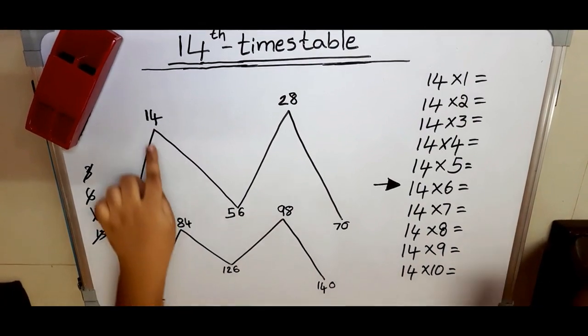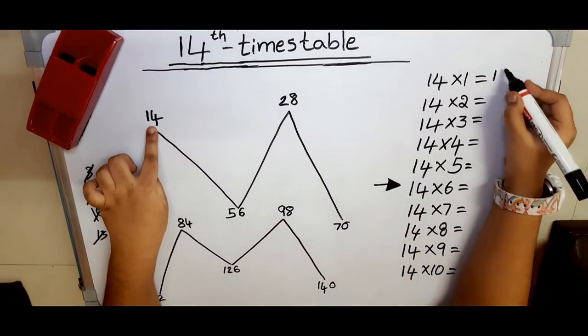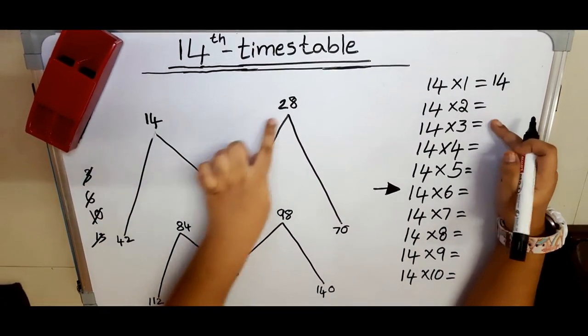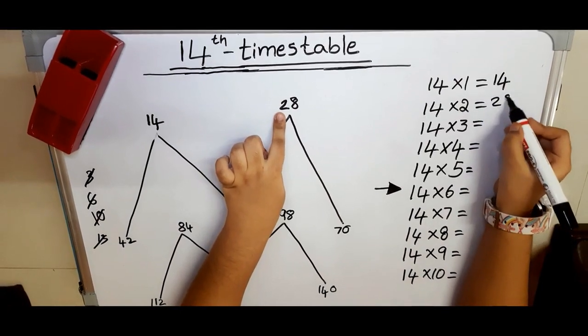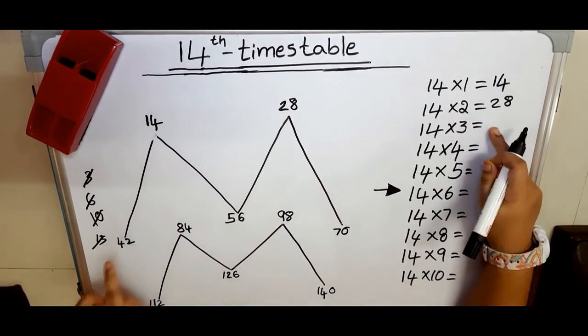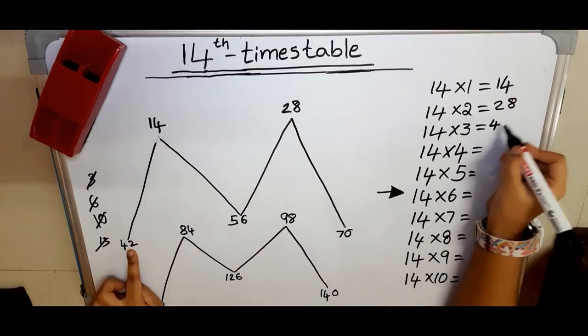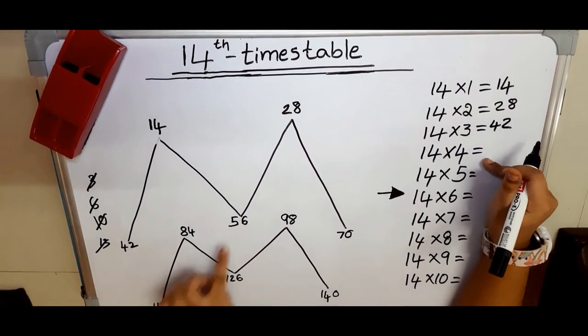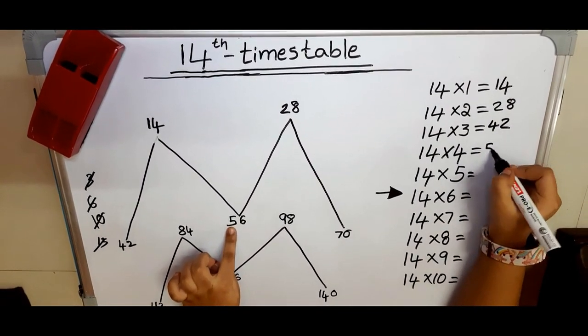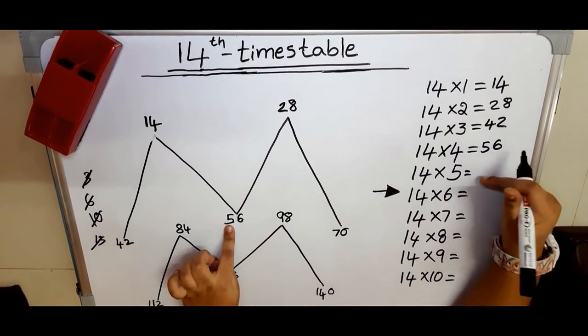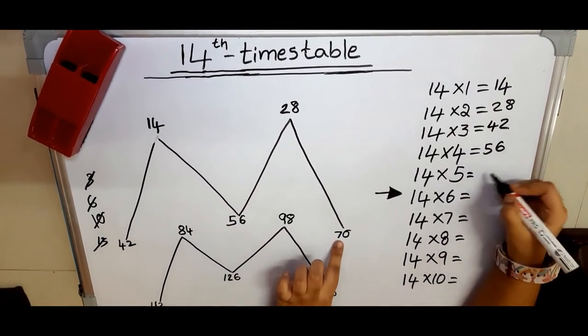Okay, let's transfer here. Fourteen ones are fourteen. Fourteen twos are twenty-eight. Fourteen threes are forty-two. Fourteen fours are fifty-six. Fourteen fives are seventy.